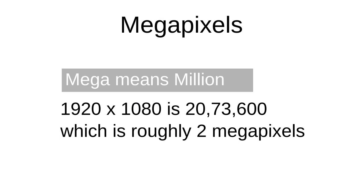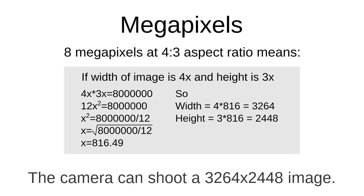If you look at megapixels, the number is not always exact — it is a marketing term, not always a completely correct number. For example, the 8MP camera number is not perfectly accurate to the megapixel count, and it also depends on the aspect ratio.